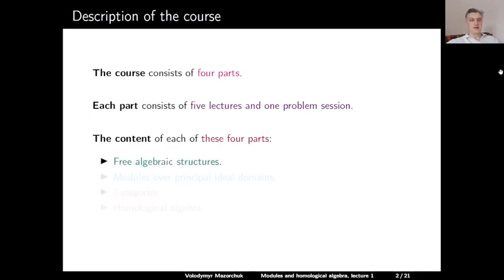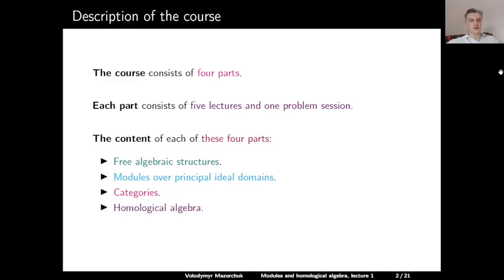The first part is about free algebraic structures. The second part is about modules over principal ideal domains. The third part is about categories. And the last part is about homological algebra. Let us start with part one, which is about free algebraic structures. Today's lecture one will be just a recap about algebraic structures.